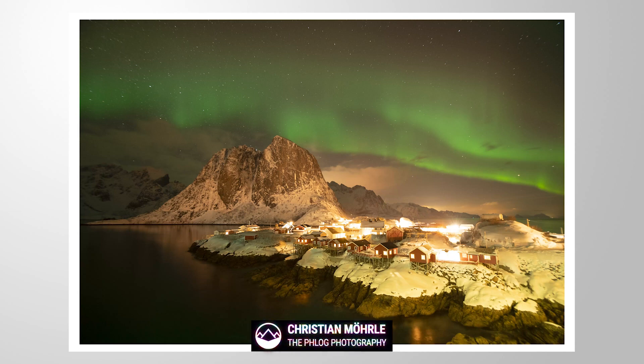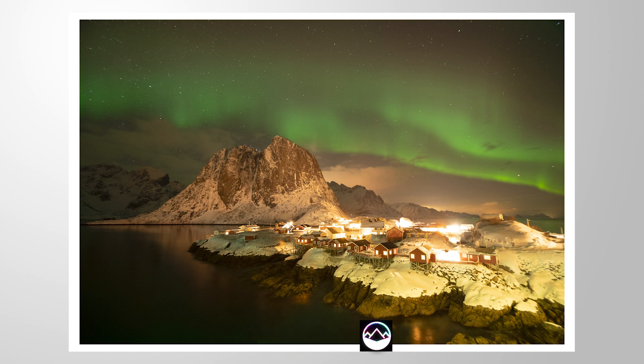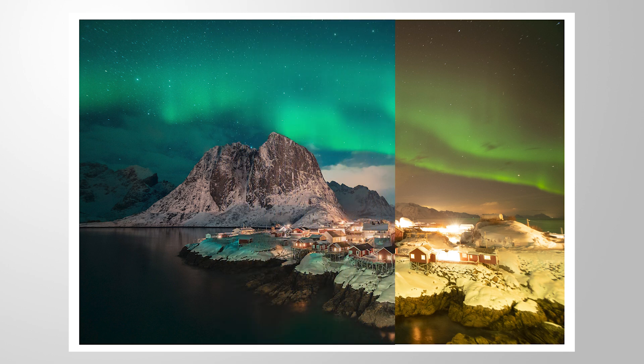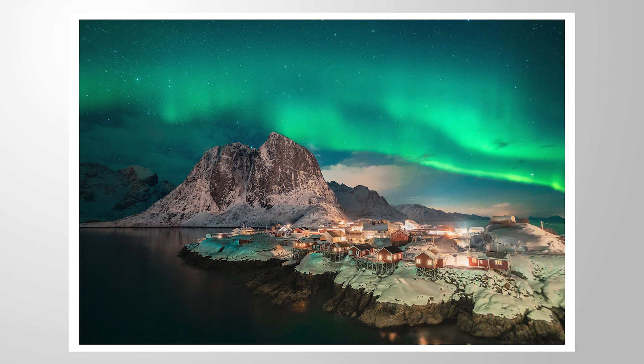Welcome to another Photoshop editing tutorial. In this video, we are going to fix this northern light landscape shot from the Lofoten in Norway. This means we are going to fix the white balance, try to fix the overexposed highlights in the foreground, and just apply a little bit of color grading and some other things. This one will be a little more complicated than usual. But if you want to follow along, you can find all the raw files needed in the description of the video. And now, without much more talking, let's begin.